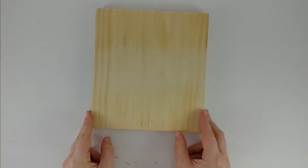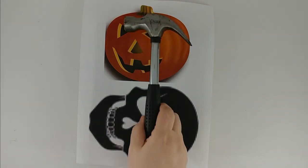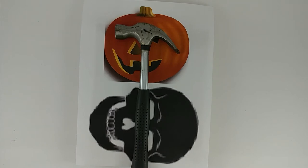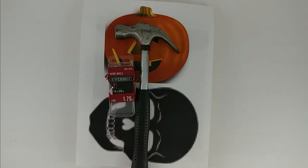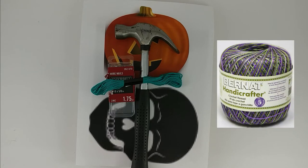To make string art, you only need a few supplies. You need a piece of wood, you need a template, a hammer, some nails. These are actually called wire nails or brads. They were in the specialty nail section in the nail aisle at Home Depot. It was $1.50 for that box. You will also need embroidery floss or crochet thread to make your finished product.